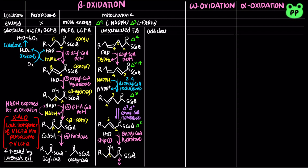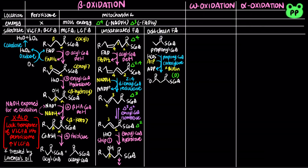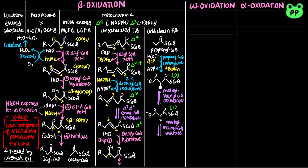Oxidation of odd-chain fatty acids would ultimately produce many acetyl-CoAs and a 3-carbon propionyl-CoA, which requires three additional enzymes to enter the citric acid cycle. First, propionyl-CoA undergoes oxidative carboxylation by propionyl-CoA carboxylase, which requires the cofactor biotin as a carboxyl carrier. This reaction is coupled to the hydrolysis of one ATP molecule to ADP and inorganic phosphate, producing the D-stereoisomer of methylmalonyl-CoA, which is epimerized to the L-stereoisomer by methylmalonyl-CoA epimerase. The L-methylmalonyl-CoA then undergoes an intramolecular rearrangement catalyzed by methylmalonyl-CoA mutase to form succinyl-CoA, which can enter the citric acid cycle. This reaction requires coenzyme B12, derived from vitamin B12 cobalamin.